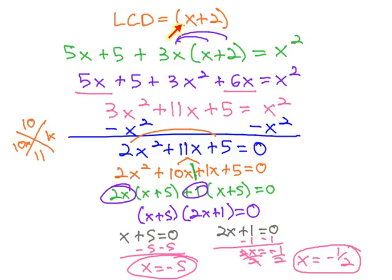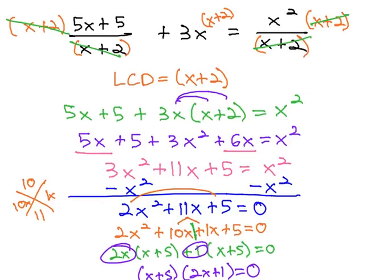Negative 1/2 in the LCD would give us 3/2, which is not 0, so it's okay as well. We solve rational equations by multiplying by the LCD.